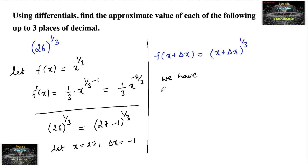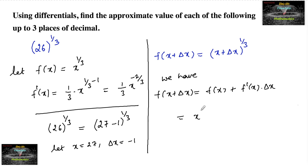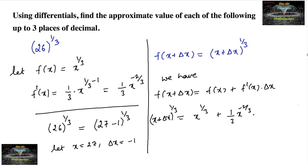We use the differential approximation: f(x + delta x) ≈ f(x) + f'(x) · delta x. Here f(x) = x^(1/3), so (x + delta x)^(1/3) equals x^(1/3) plus f'(x), which is (1/3) x^(-2/3), times delta x.